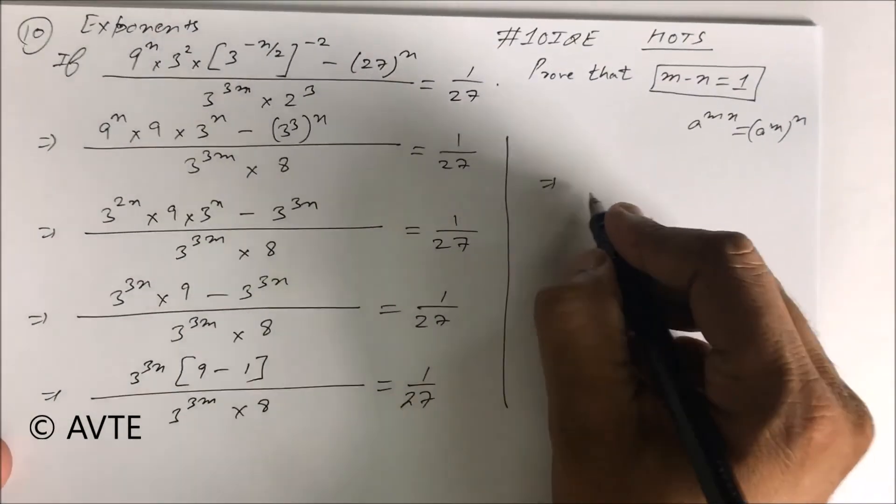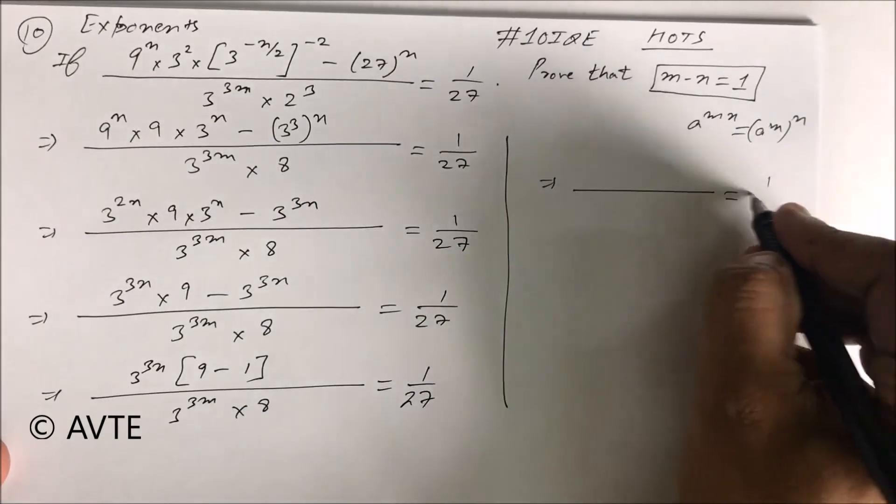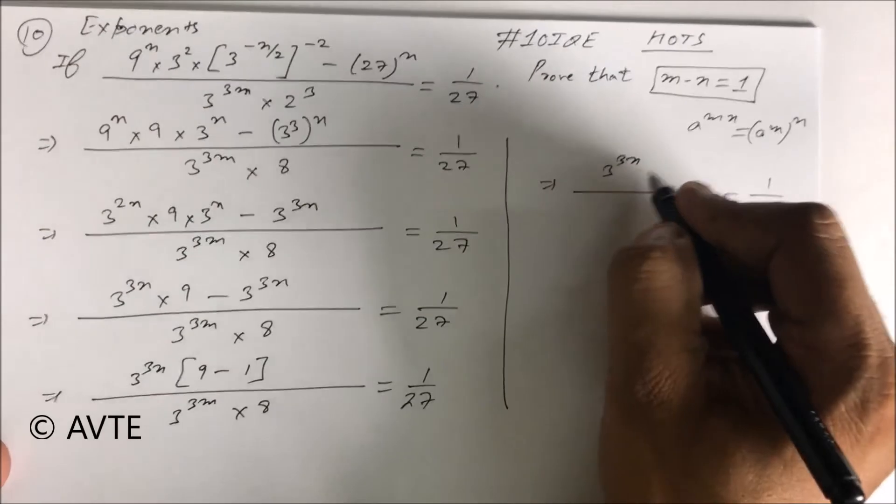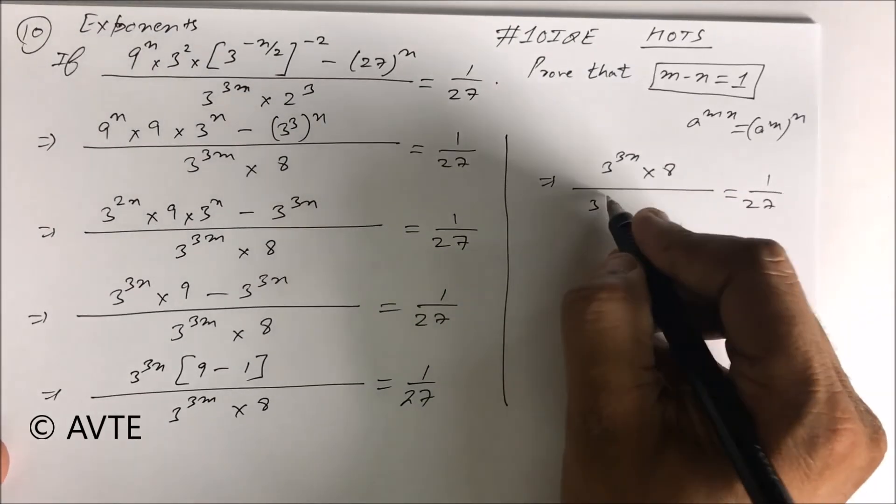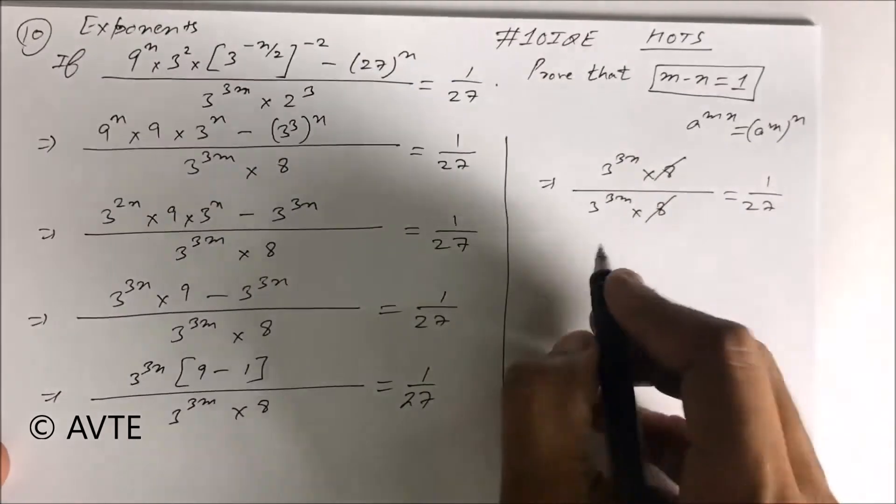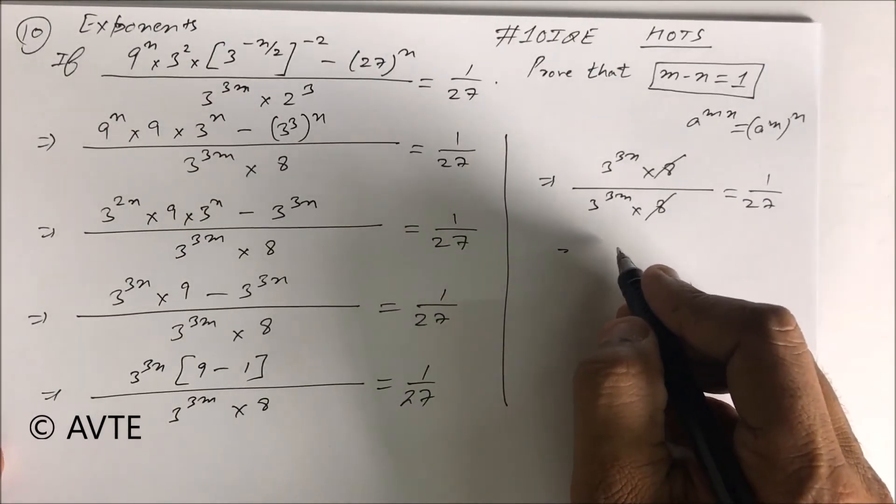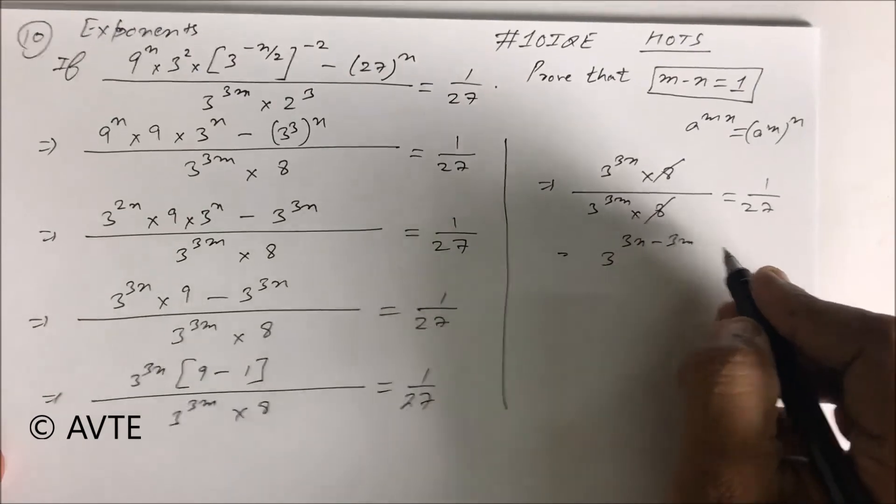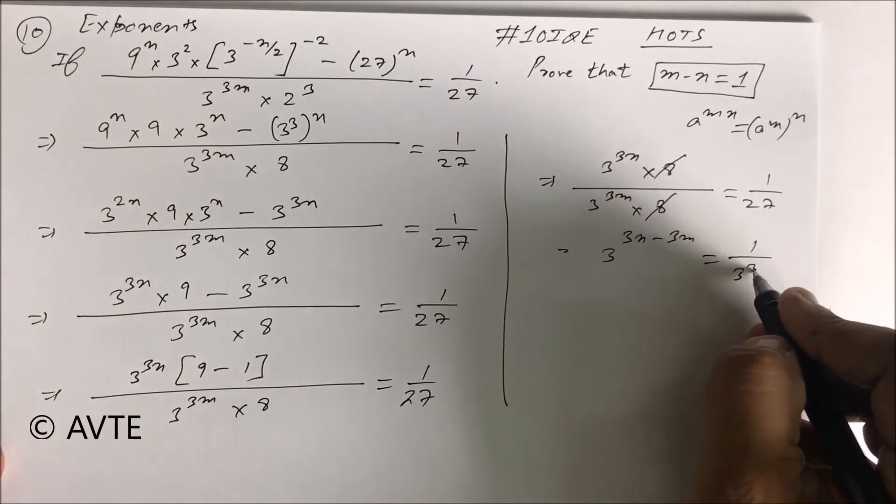So you can see here, this is 3 raised to the power 3n into 8 upon 3 raised to the power 3m into 8. So this is 3 raised to the power 3n minus 3m is equal to 1 upon 3 cube.